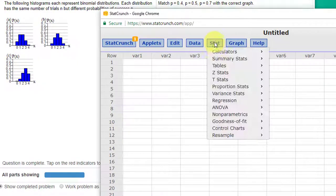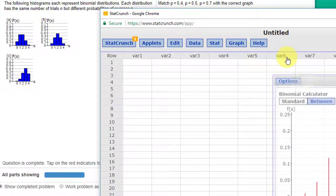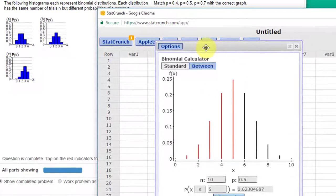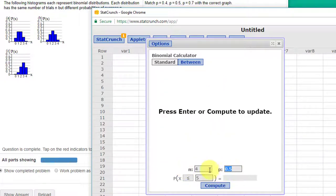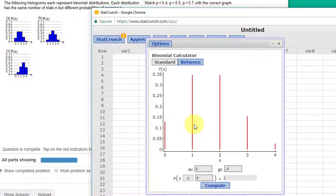We're going to go to Stat, Calculators, Binomial. We bring up our calculator. What is our n? Our n is one, two, three, or four. We don't use the zero, so n is four, and our p is 0.4. I'm going to put that as less than or equal to four so it makes sense. And so we get our histogram: zero, one, two, three, four. And that kind of looks like alpha.